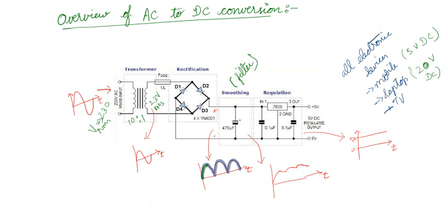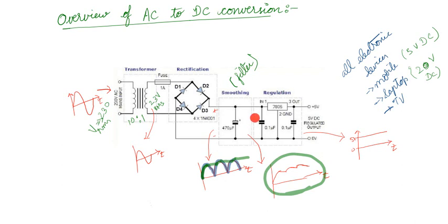The capacitor is charging — this is shown by the green line — then slowly discharging, then charging again, then discharging. Charging, discharging, repeatedly. The output of the filter or smoothing circuit will be of this type: initially charging, then it will be nearly staying constant.